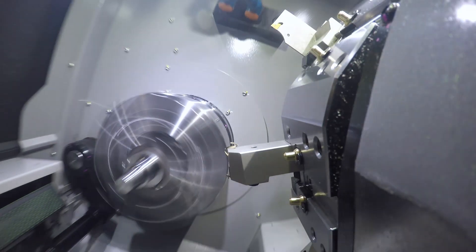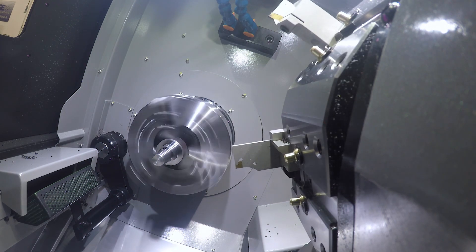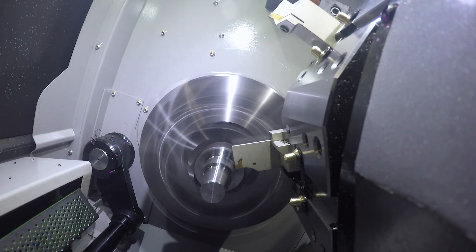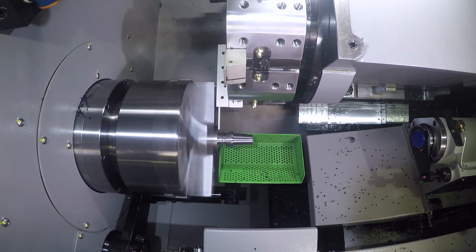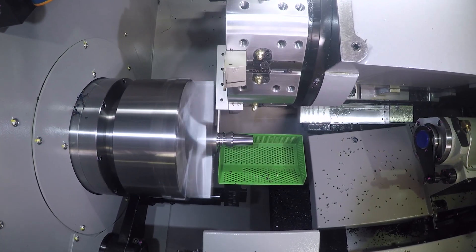No job is complete until you remove your old part and put a new one in. With the factory-integrated parts catcher and work conveyor, this has never been easier. Program an M17 before your cutoff cycle and we'll do the rest.